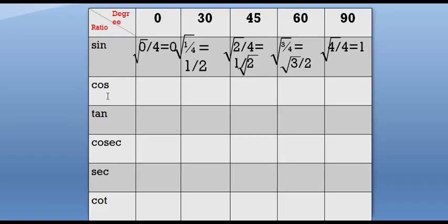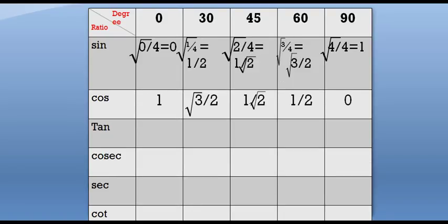We will write the cosine values in the reverse manner of sine. Like, sine 90 is equal to cos 0. We will start from 1: 1, root 3 by 2, 1 by root 2, 1 by 2, 0. We will write like this — just the reverse of sine theta will be the value of cos. We have nothing extra to do here.